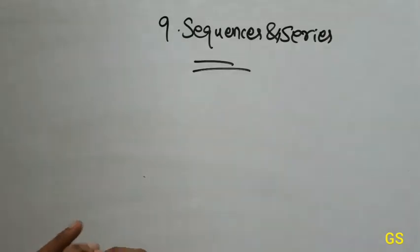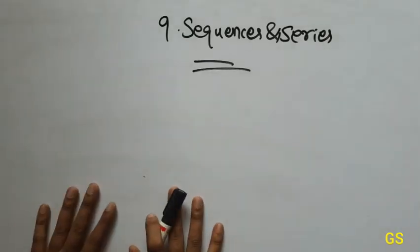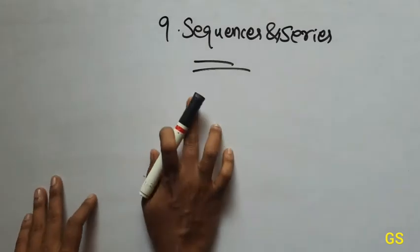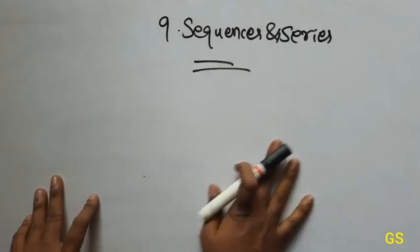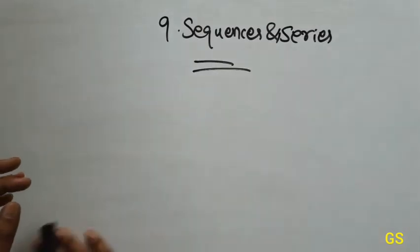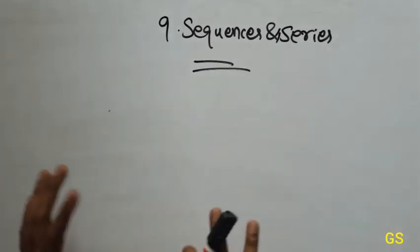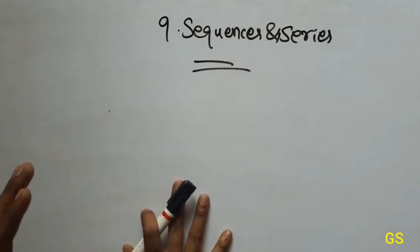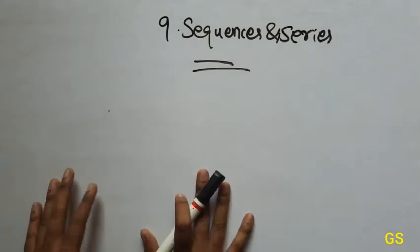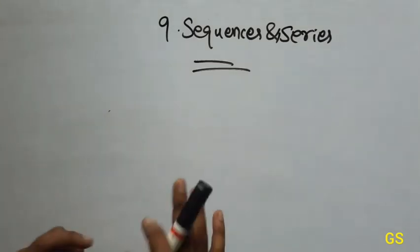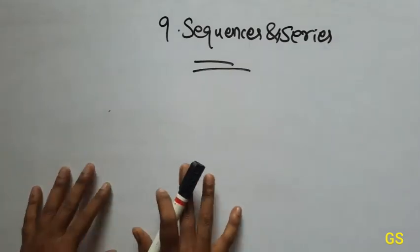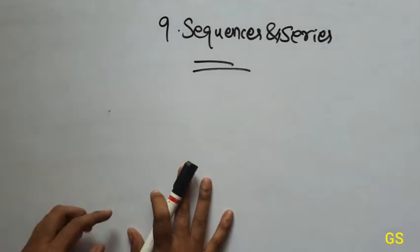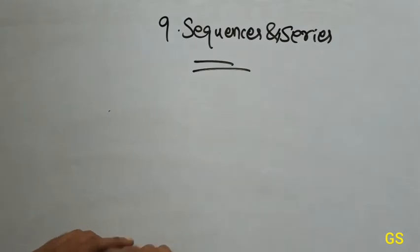Hi friends, we are going to see the 9th chapter in CBC class 11 — Sequence and Series. Why do I choose this? It's very easy to finish the chapter. We will finish the chapter in one week, on Monday, November 9, 2020.